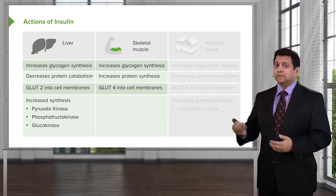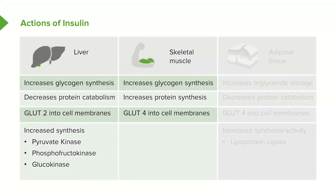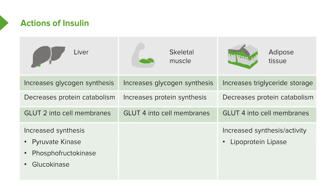In the skeletal muscle, insulin increases glycogen synthesis and protein synthesis, and it uses the porter GLUT4 into the cell membranes. And in the adipose tissue, it increases triglyceride storage and decreases protein catabolism. It uses the porter GLUT4 and moves sugar into cell membranes. There is increased synthesis and activity in adipose tissue under the influence of insulin, and we use a hormone called lipoprotein lipase.